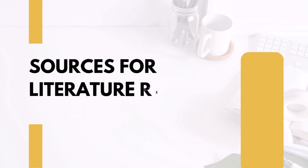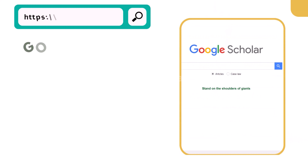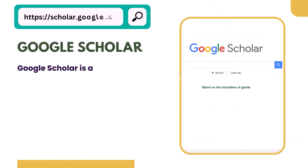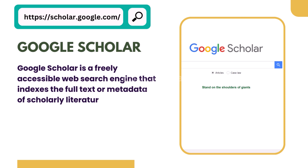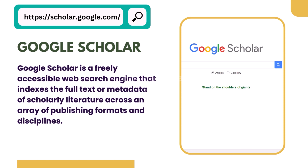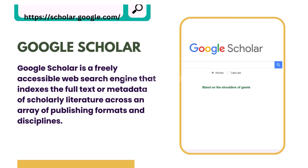Sources for literature review. 1. Google Scholar. Google Scholar is a freely accessible web search engine that indexes the full text or metadata of scholarly literature across an array of publishing formats and disciplines.